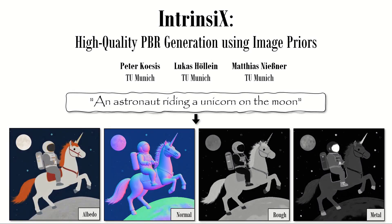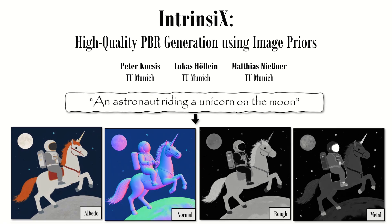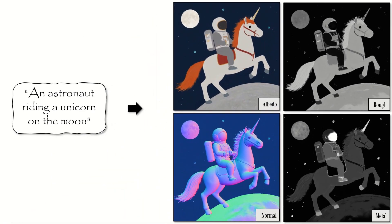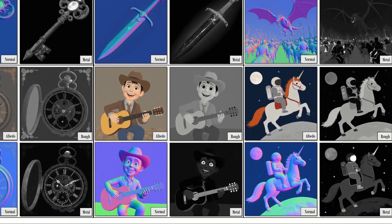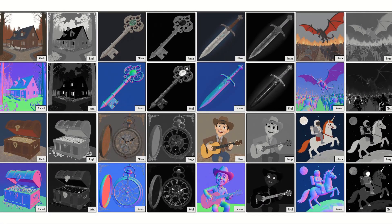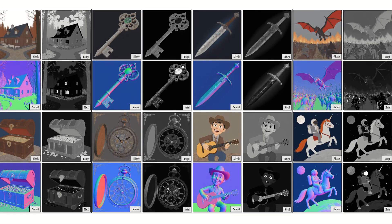We present Intrinsics, high-quality PBR generation using image priors. Our approach takes text as input and generates physically-based rendering maps, such as Normal, Albedo, Roughness, and Metallic. We exploit the strong image prior of pre-trained text-image models to generate diverse and high-quality PBR maps.